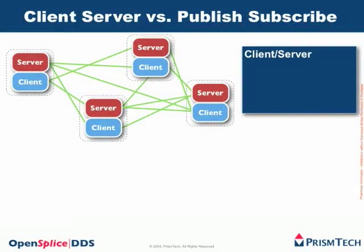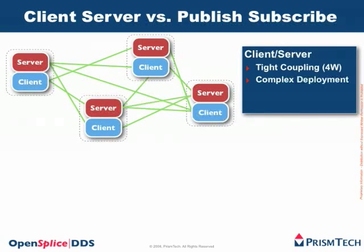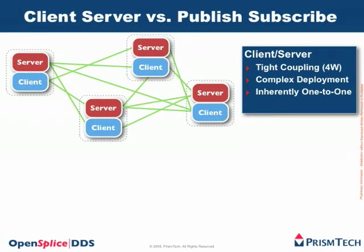Something else interesting when comparing client-server and PubSub: first of all, PubSub leads to tightly coupled architecture — and this was summarized by the 4Ws of client-server. Client-server technologies typically lead to systems that are complex to deploy because you have to set up all these point-to-point connections, which is tedious and cumbersome. They are inherently one-to-one — you can emulate one-to-many communication but that is made out of many one-to-one communications, which is not the most efficient way.